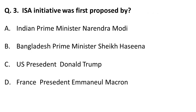The ISA initiative was first proposed by whom? It was first proposed by Indian Prime Minister Narendra Modi from Wembley Stadium, London, in 2015. Remember, it was initiated and proposed by Prime Minister Narendra Modi.